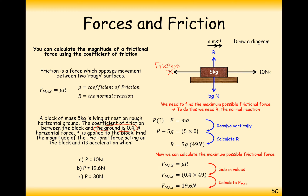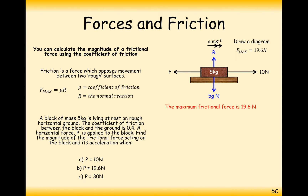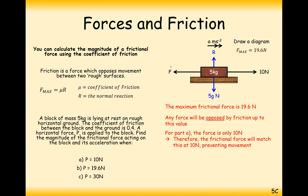We have a 10 newton force trying to pull it to the right, and friction that can reach a maximum of 19.6 newtons. The 10 newton force is not big enough to overcome friction, so the frictional force will prevent the block from moving. In this case, the frictional force will be just 10 newtons — only as much as needed to resist the applied force.